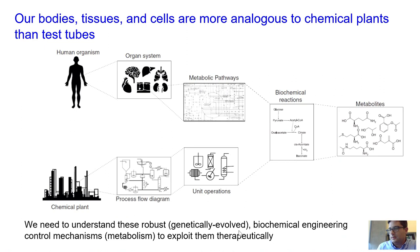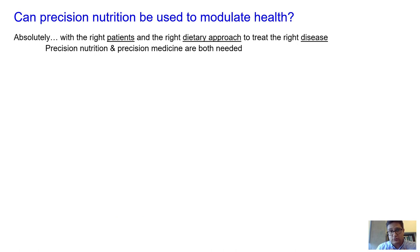We need to understand these robust, genetically evolved biochemical engineering mechanisms in order to exploit them therapeutically or through the diet. The overarching question for this workshop is: can precision nutrition or personalized nutrition be used to modulate health? The oversimplified answer is absolutely, if we have all the pieces together. There are going to be components of both precision nutrition and precision medicine that are needed.